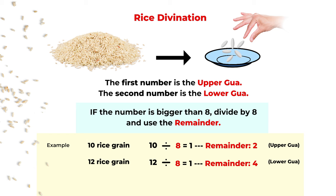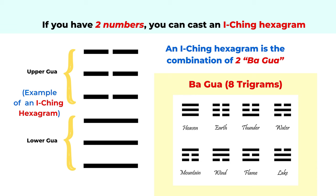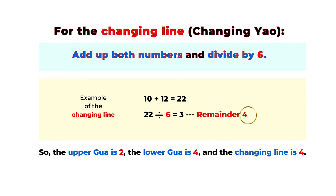Now we know the upper gua and lower gua numbers, but we have one more to find — the changing line. This numbering method is based on the Plum Blossom Yi Jing, a more freestyle Yi Jing divination. With this method, there is always a changing line that tells you the future result. To find the changing line number, simply add up those two numbers and divide by six. For example, the first pick was 10 grains, the second was 12, so the total is 22. Twenty-two divided by six is three with a remainder of four, so four is the changing line number. We divide by six because there are six lines in the Yi Jing hexagram, and we want to find which line is the changing line.